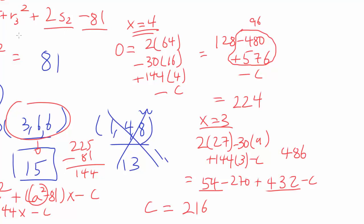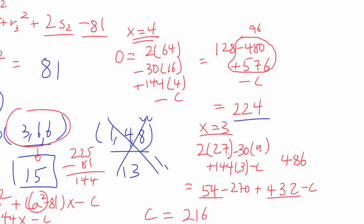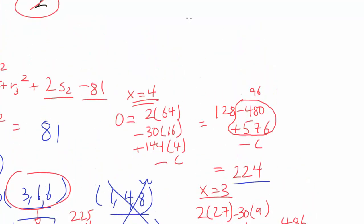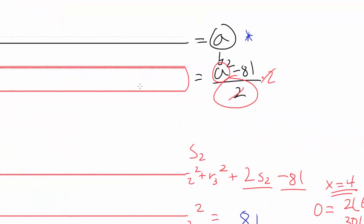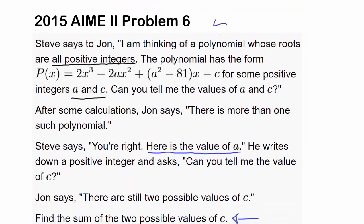We are one step away from being done. Our answer is 224 + 216. Our answer is 224 + 216, also known as 440. So our answer to this AIME number 6 question is going to be 440.